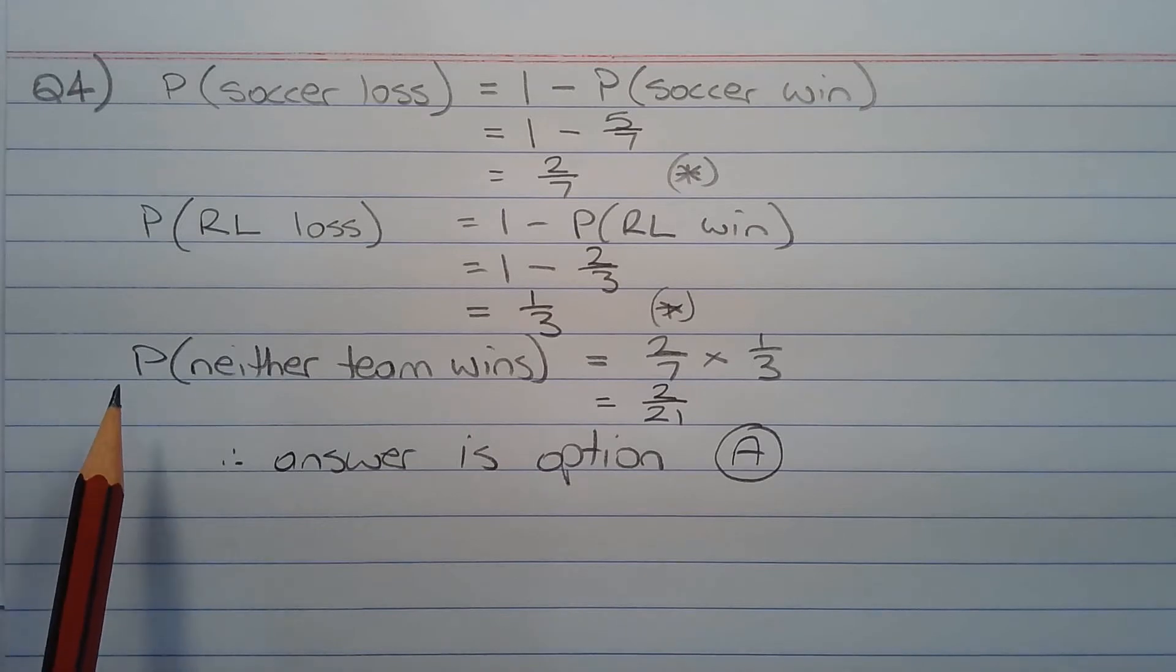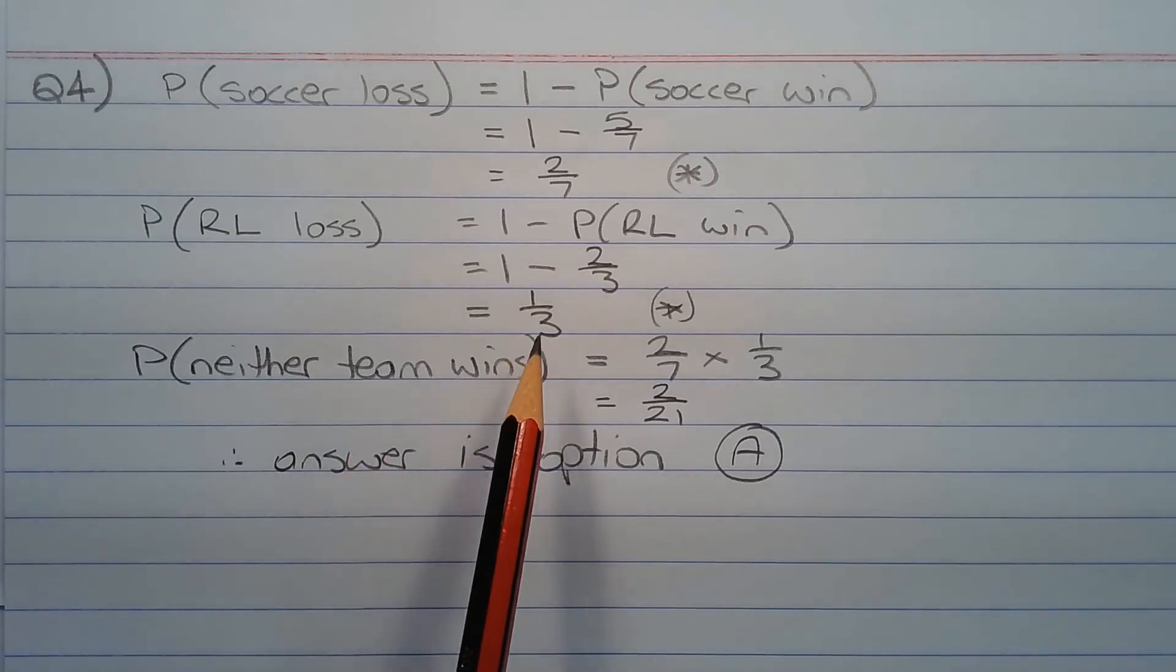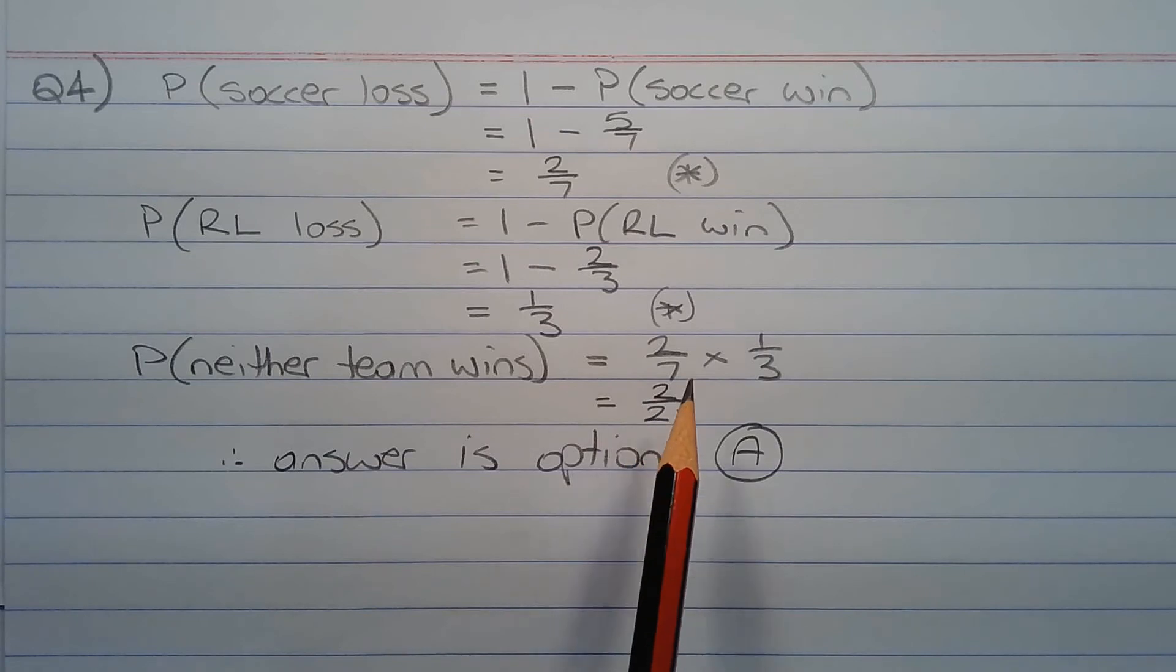Now the probability that neither team wins is a product of 2 over 7 and 1 over 3, so 2 over 7 times 1 over 3 equals 2 over 21. Therefore, the answer is option A.